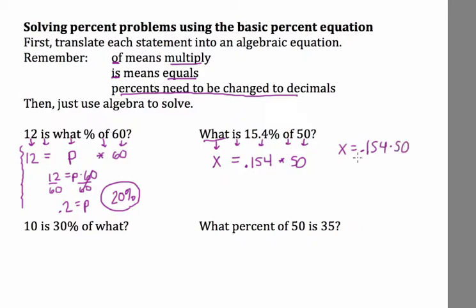So X equals 0.154 times 50. Now notice here, the X is already by itself, so all I have to do to solve this problem is do the arithmetic I'm given here: 0.154 times 50. So X equals 7.7.